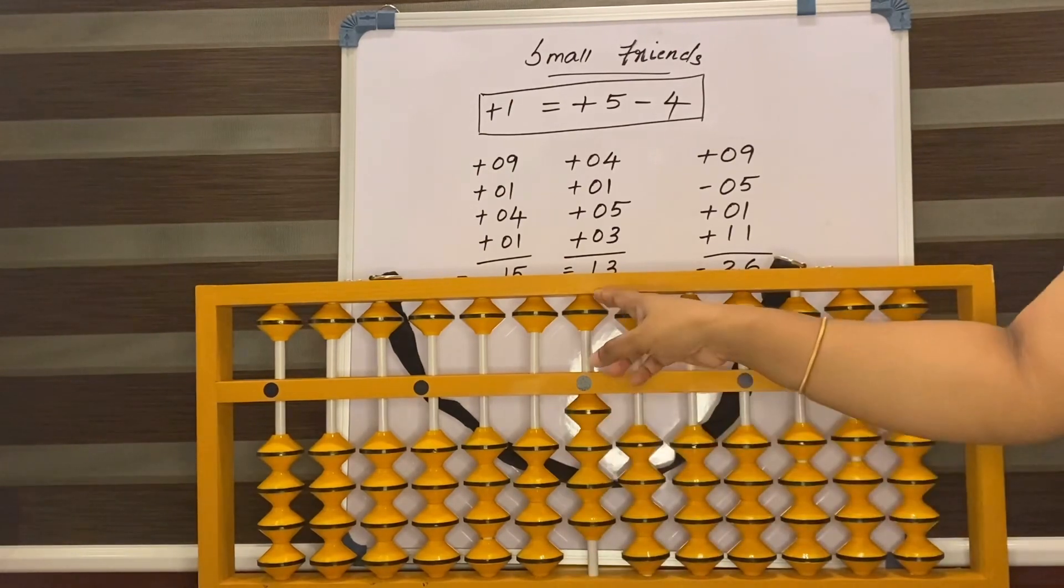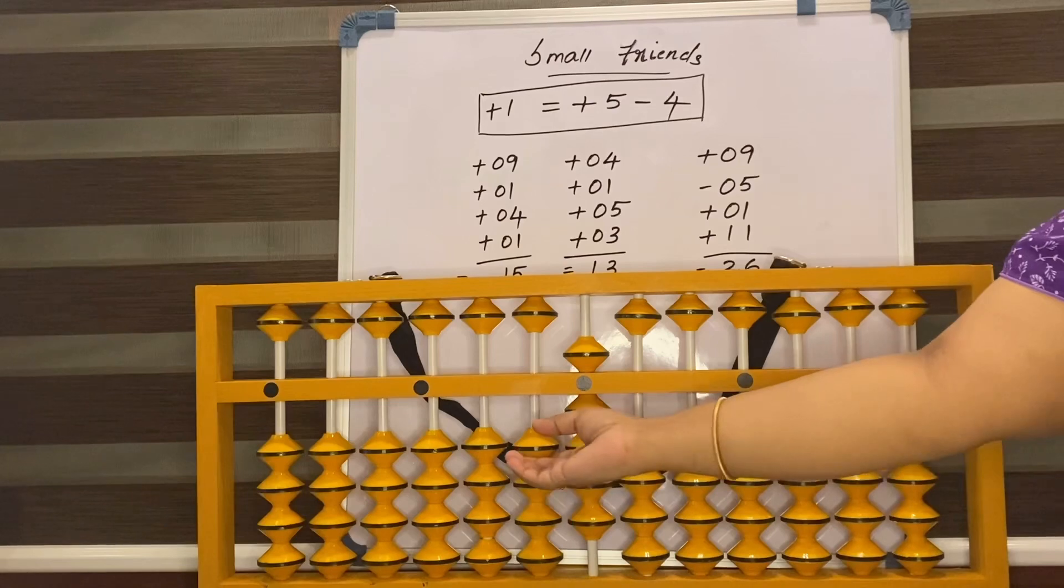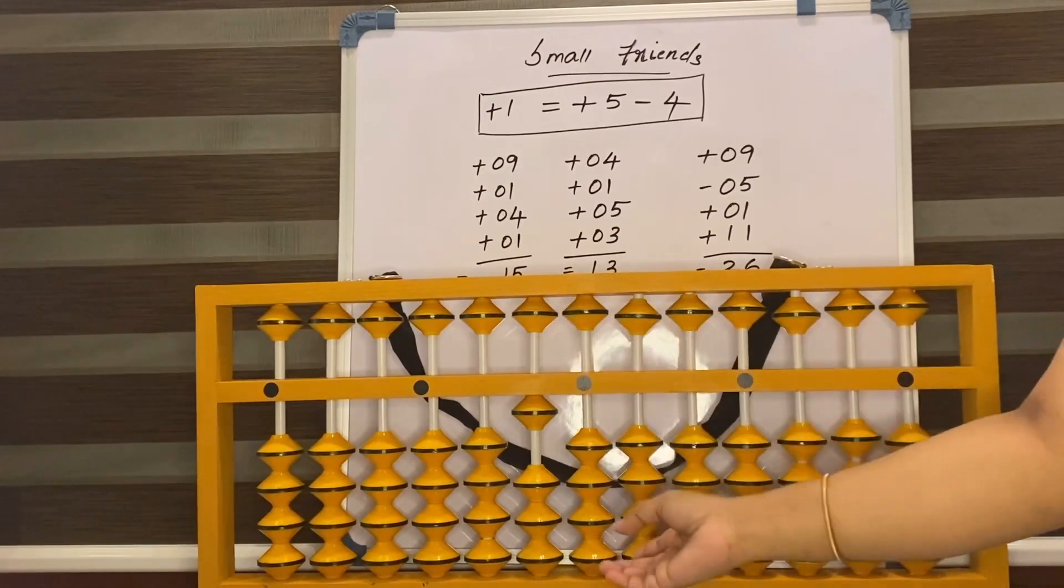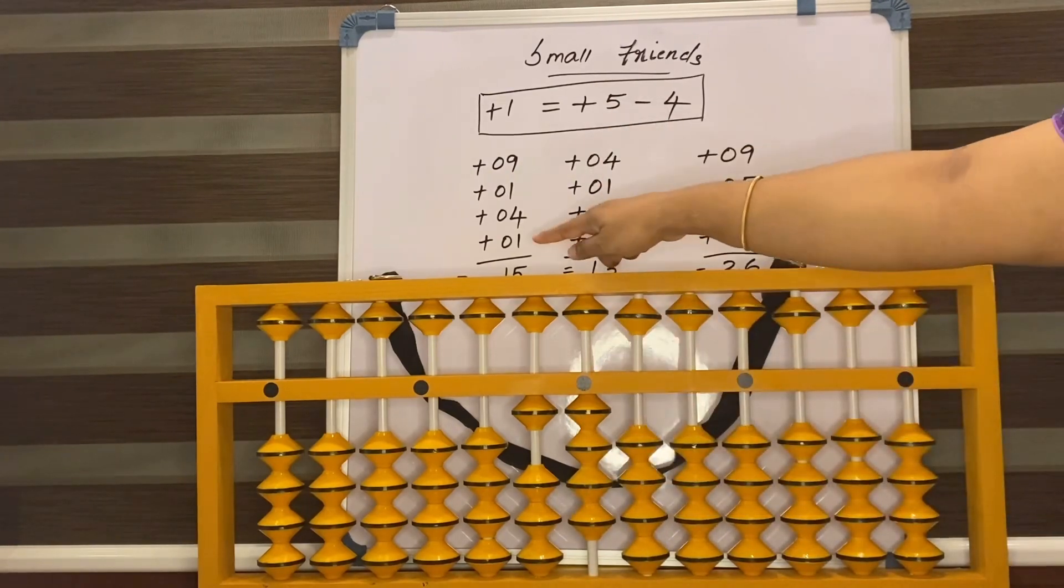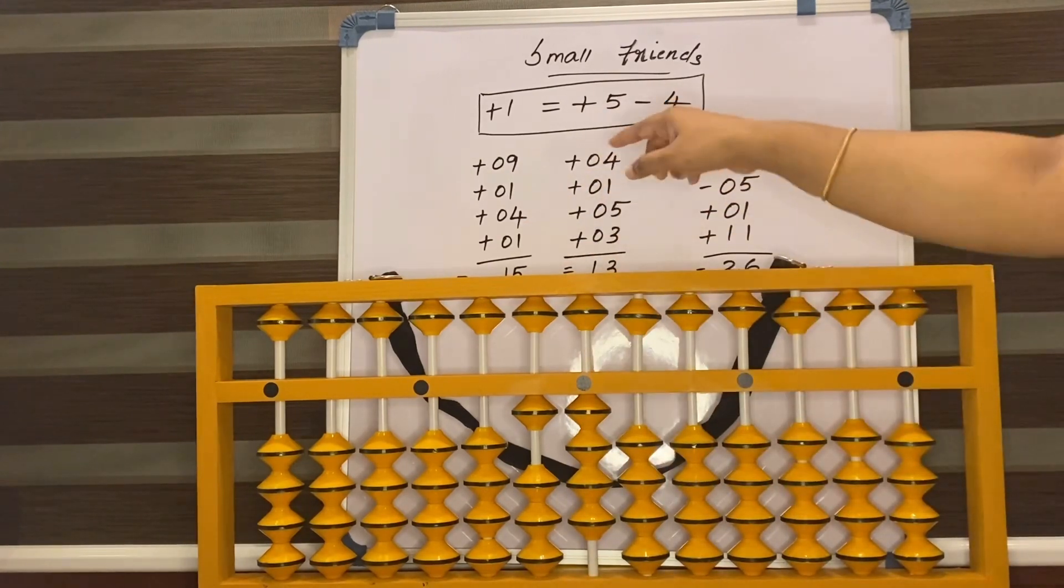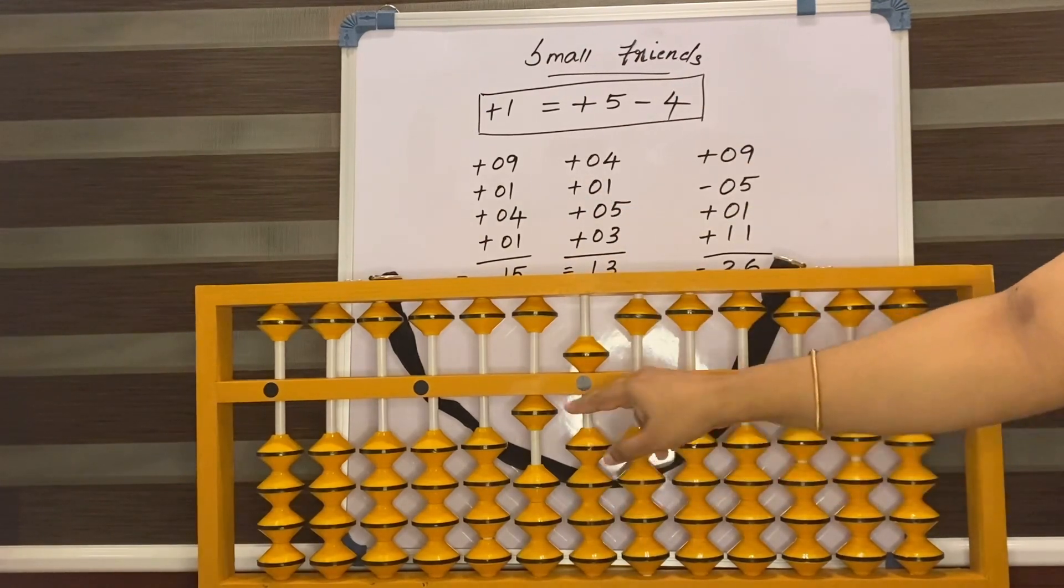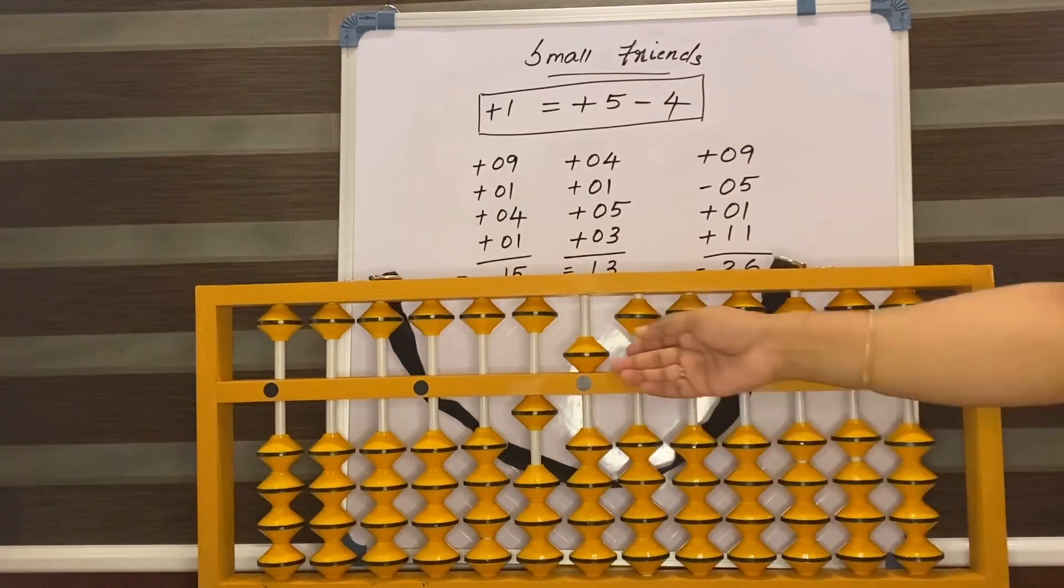Add 9, add 1, that is add 10 less 9, 4. Now 1. How to add 1? Add 5 less 4. Now, what is the answer? 15.